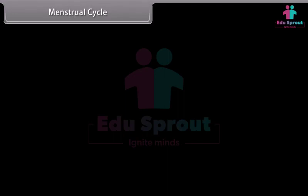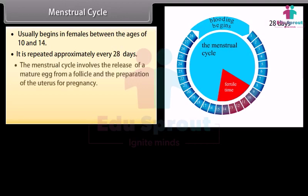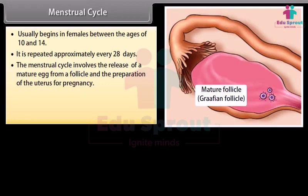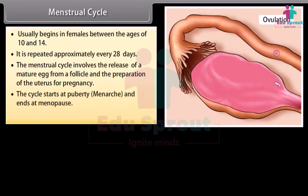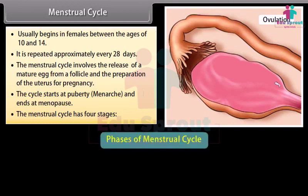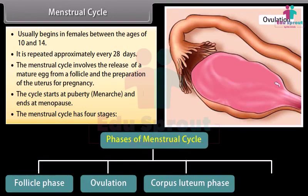The menstrual cycle usually begins in females between the age of 10 and 14, and is repeated approximately every 28 days. It involves the release of a mature egg from a follicle and the preparation of the uterus for pregnancy. The cycle starts at puberty or menarche and ends at menopause. The menstrual cycle has four phases: follicular phase, ovulation, corpus luteum phase, and menstruation.